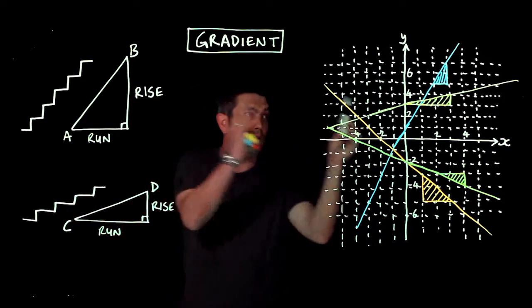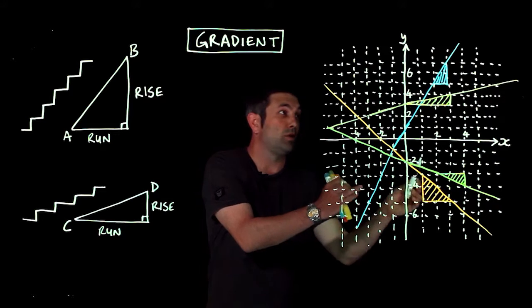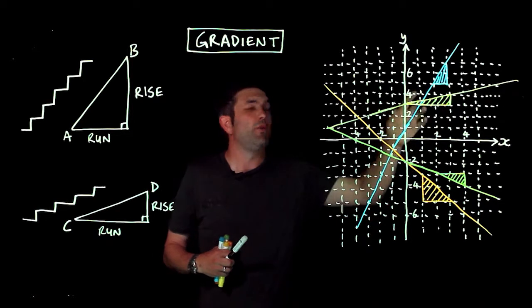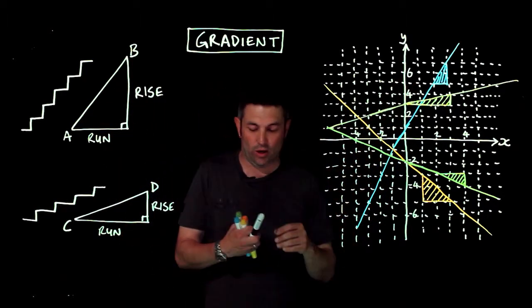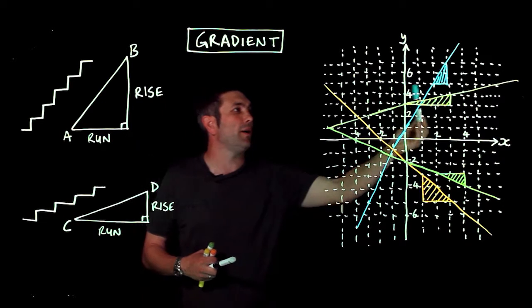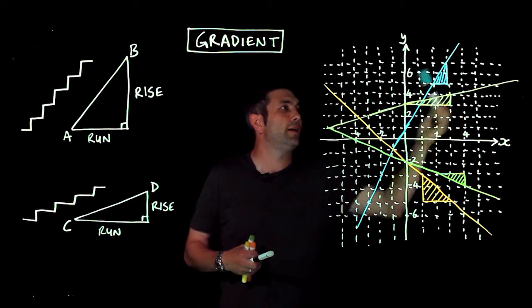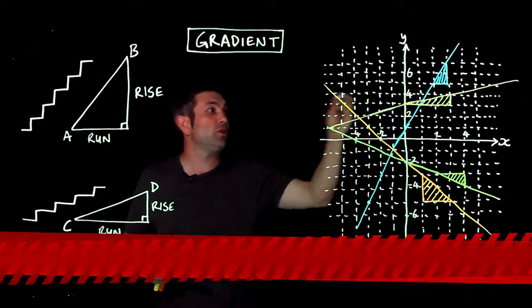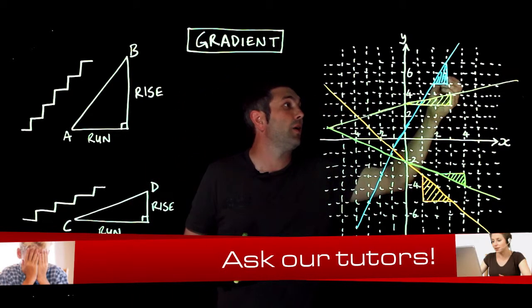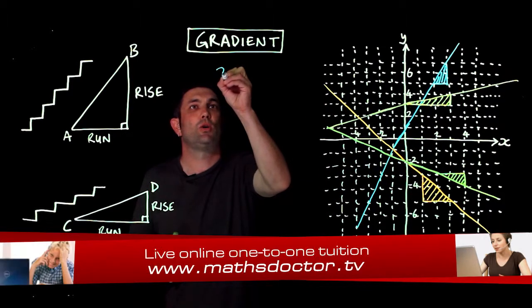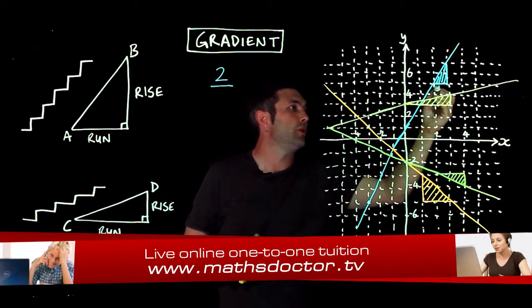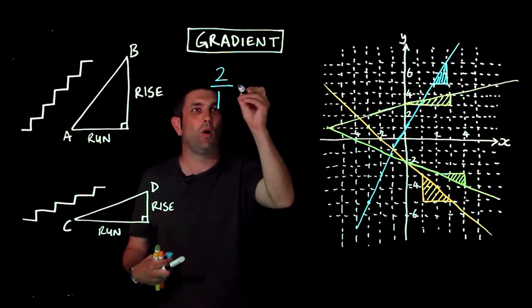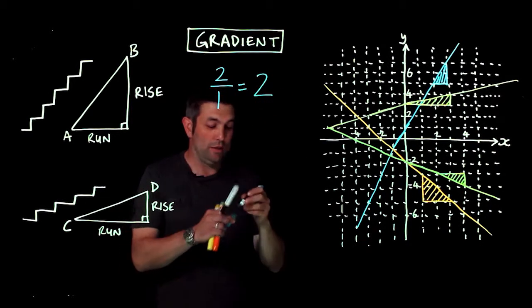Taking it over to some graphs, I've drawn four graphs on this grid and already drawn one triangle on each line. For the blue line, in order to work out the rise over the run I just need to count some squares. The rise is two and the run is one, so rise over run is two over one — the gradient of that blue line is two.